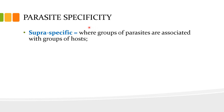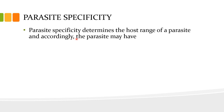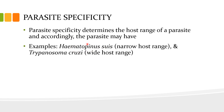Parasite specificity may be supraspecific, where groups of parasites are associated with groups of hosts, or infraspecific, where a specific parasite is associated with a specific species of host. Parasite specificity determines the host range of a parasite, which may be narrow or wide. Certain parasites such as Haematopinus suis infest only pigs and are referred to as narrow host range, while some, such as the protozoan parasite Trypanosoma cruzi, have a wide host range and in fact many hosts.